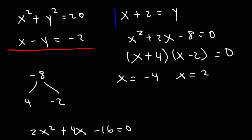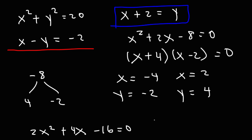We have the equation y equals x plus 2, so y is 2 more than x. When x is negative 4, y is negative 4 plus 2, which is negative 2. When x is 2, y is 2 plus 2, which is 4. Thus we have two possible solutions: (negative 4, negative 2) and (2, 4).